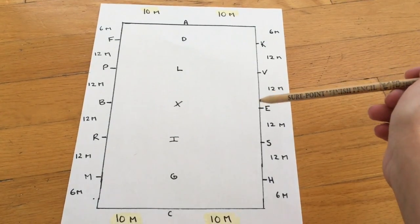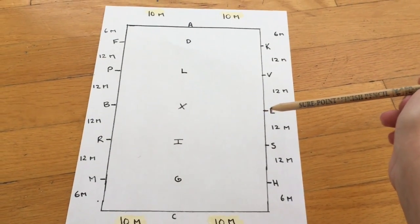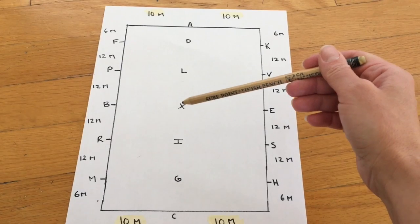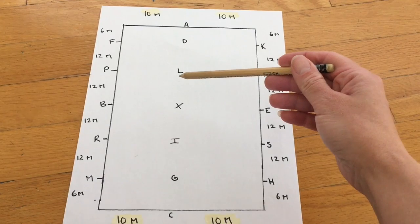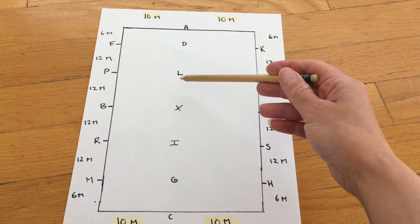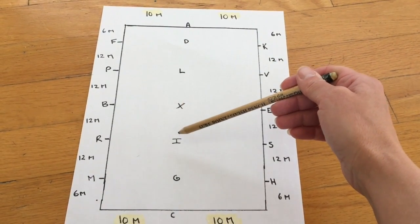When we want to ride our accurate circle in the middle of the ring, now we have to center it here. So we need to be 10 meters either side of X. So that puts us 2 meters this side of L and 2 meters this side of I.